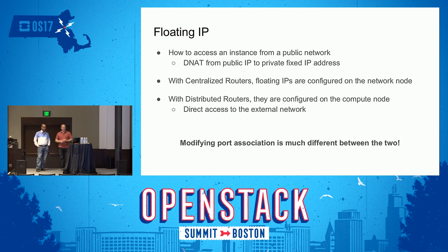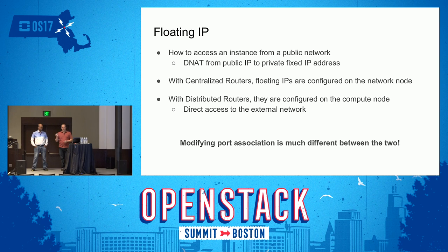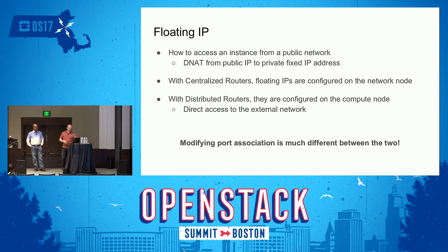The problem we're talking about is when we change the port association — for example, when you take a floating IP and move it from one VM to another. In the centralized routing case, it just changes an IP tables entry and communication continues. But in the DVR case, when you reassociate a floating IP between instances, it has to tear down all that state on one compute node, build it up on another, and send out gratuitous ARPs. That takes more time, ARPs can get lost, and you can run into issues there. It works pretty well, but in a few cases it caused problems.